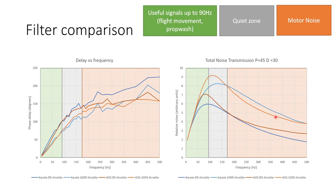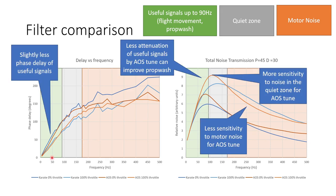So if we look at these two filter approaches we can see that the AOS tune has slightly less phase delay in the zone of useful signals and slightly less transmission overall in the zone of motor noise. But it's a trade-off you don't get something for nothing and the AOS tune has a little bit more noise in this quiet zone here than the karate tune. So if your quad has quite a bit of noise between 90 hertz and about 170 hertz you might be better off picking the karate tune. But if it has less noise in that 90 to 170 hertz band you're probably better off going with the AOS tune.